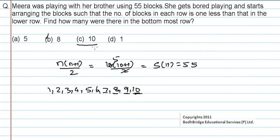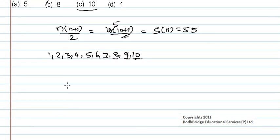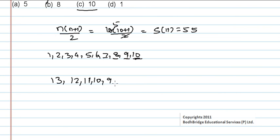The row arrangement can also be done another way. It can be like 13, 12, 11, 10, and 9. If you consider this, the cumulative sums are 13, 25, 36, 46, 55. So she can also arrange the rows as 13, 12, 11, 10, 9, and according to that the bottom row would be 13.